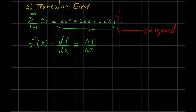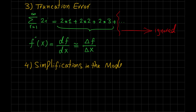A fourth type of error is related to simplifications we make in mathematical or engineering models. By models, I mean mathematical models, physical or engineering models.